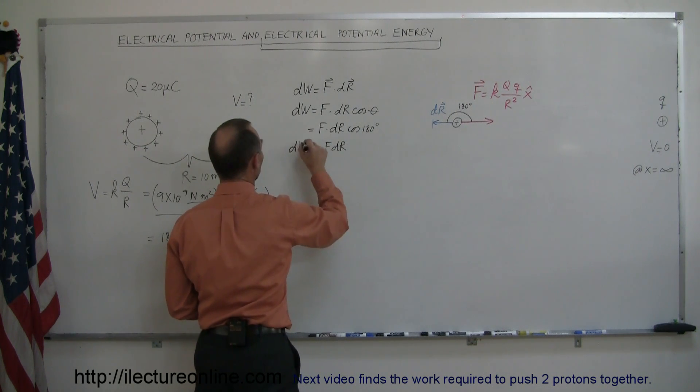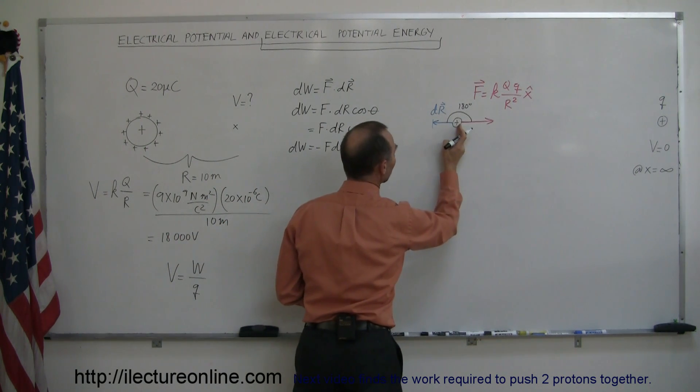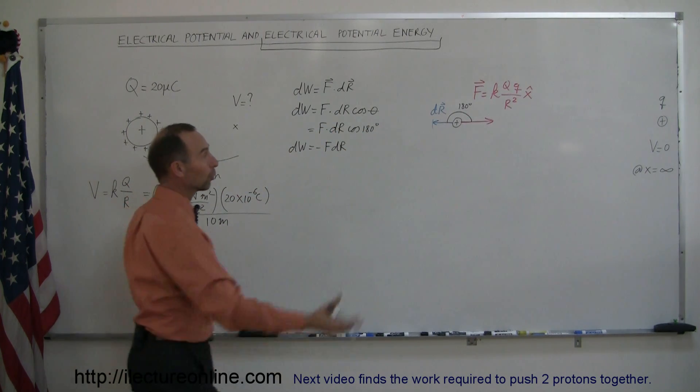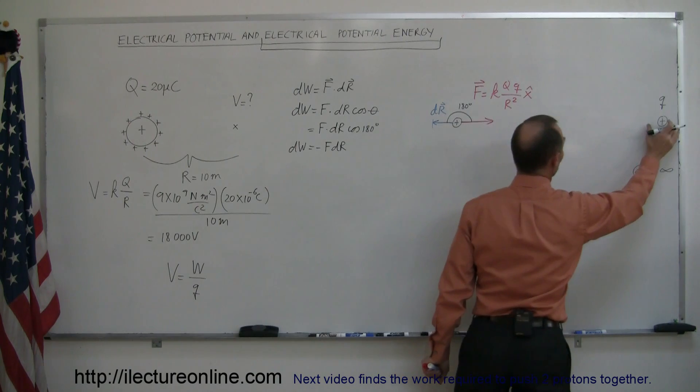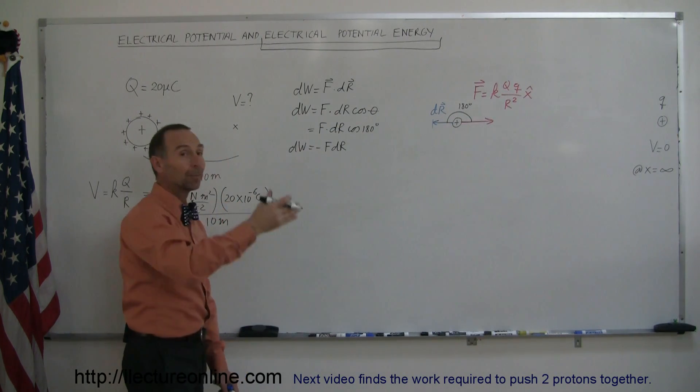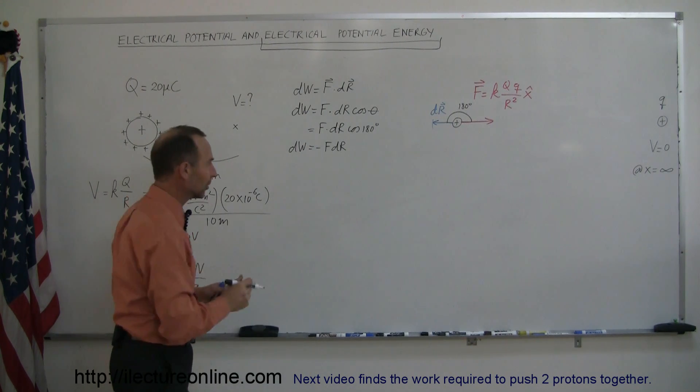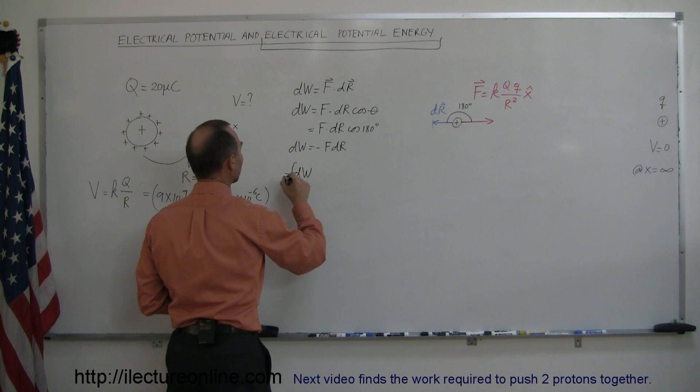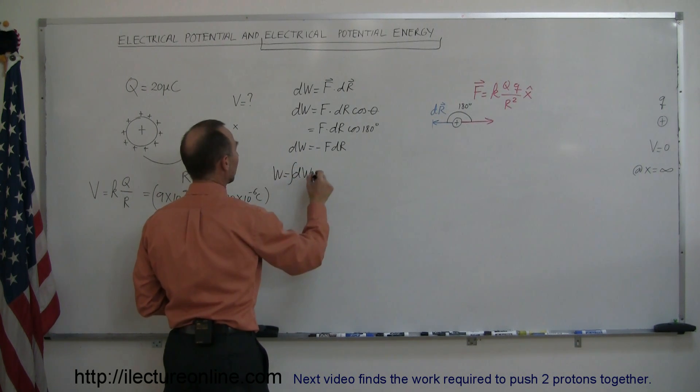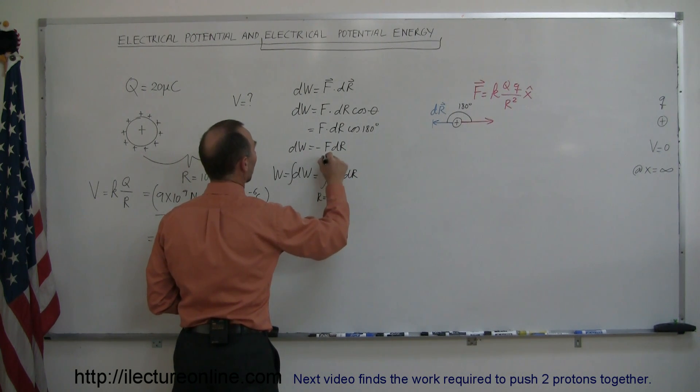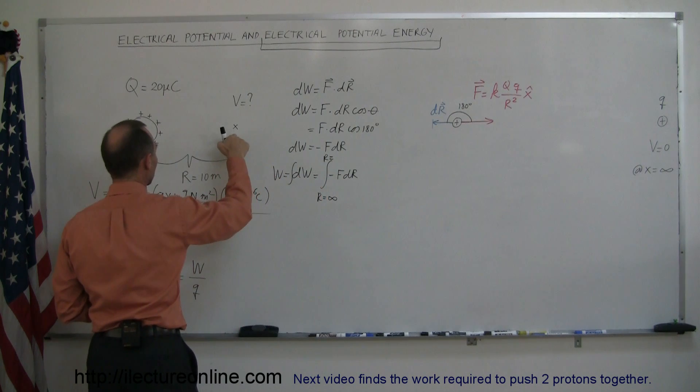That's the amount of work we did to move it from this point to a point a little bit closer, a little dr closer. So to find the total work done, to take this charge all the way from here, all the way over to this location, we need to add up all those little dws, and of course adding up all these little dws is the same as integrating. The integral of dw is equal to the total work done, is equal to the integral of minus F dr, from r equals infinity to r equals that location right there.